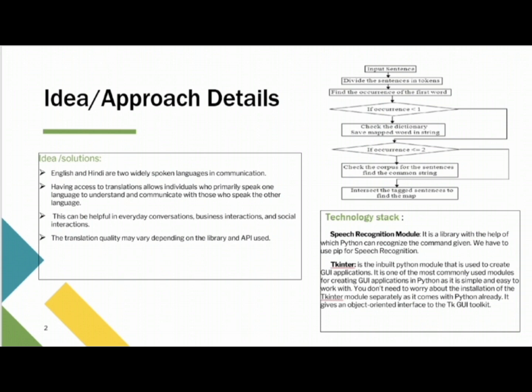We can also use this translator to communicate in multiple languages. The translation quality may vary depending on the library and the API used. The flowchart in this slide explains the back-end of this translator. The technology used in this translator are Google Translator and Tkinter. This translator can also be used in text form — it takes input in text form and gives the output in the required language to the users.